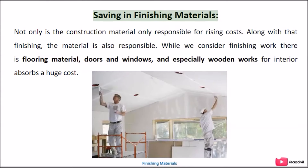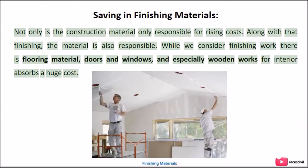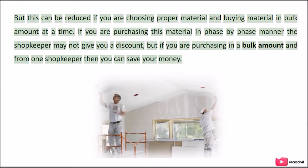The sixth tip is saving on finishing materials. Not only construction materials, but finishing materials are also responsible for rising costs. When we consider finishing work, there is flooring material, doors, windows, and especially wooden work for interiors, which absorbs a huge cost. This can be reduced by choosing proper material and buying in bulk. If you purchase from one shopkeeper in bulk rather than phase by phase, you can save your money.